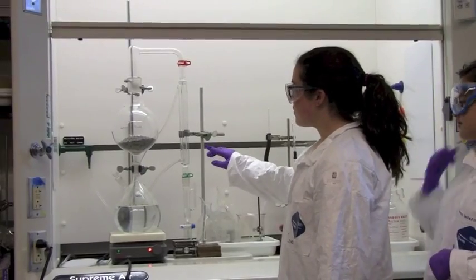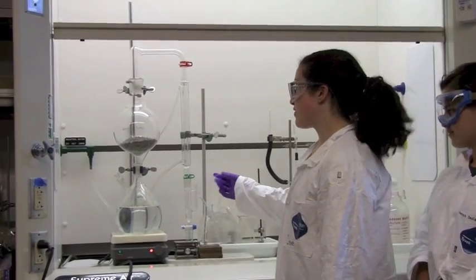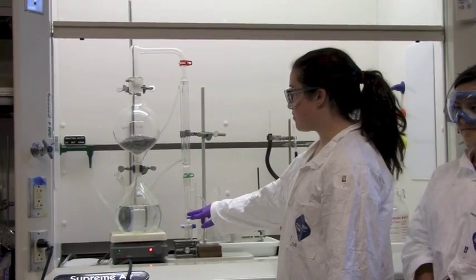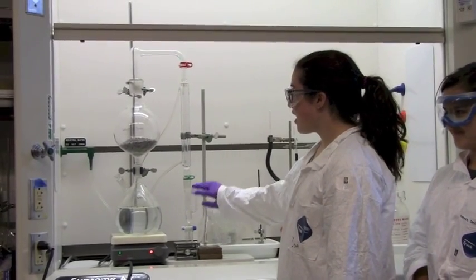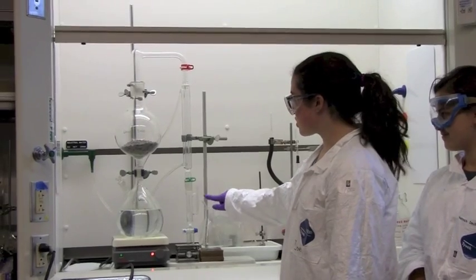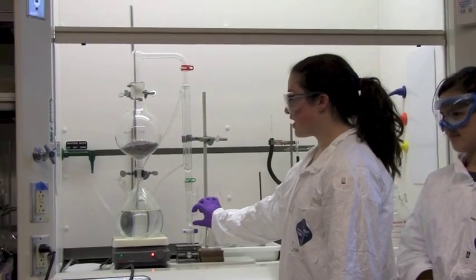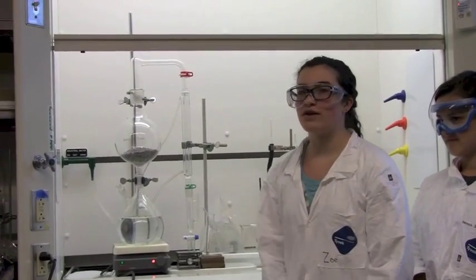So what happens is an oil will be formed from the lavender, and because the density is lighter than water, it will sit on top and all the water that comes down will just go into this Erlenmeyer flask. And once we're done, we can just remove the last bit of water and just have the oil left.